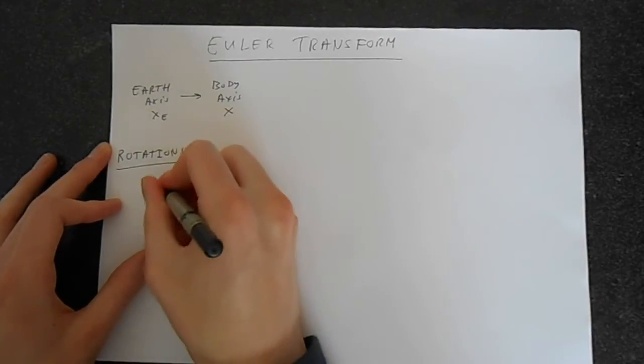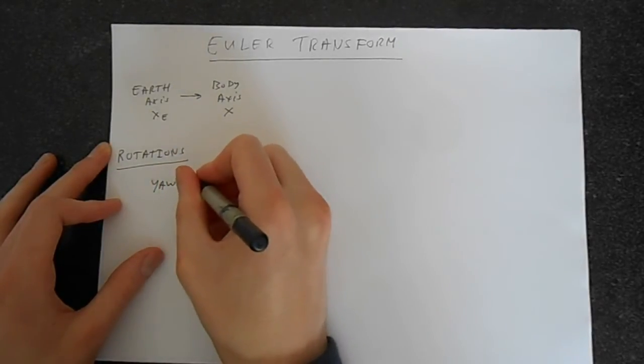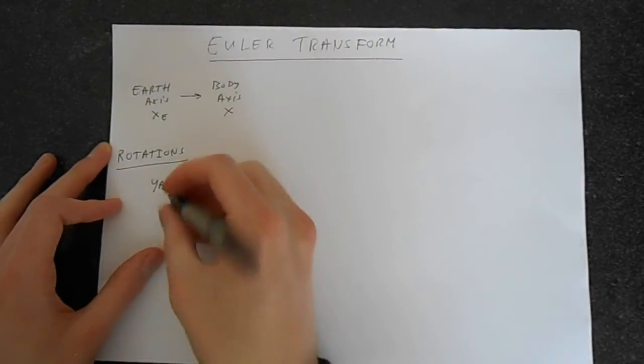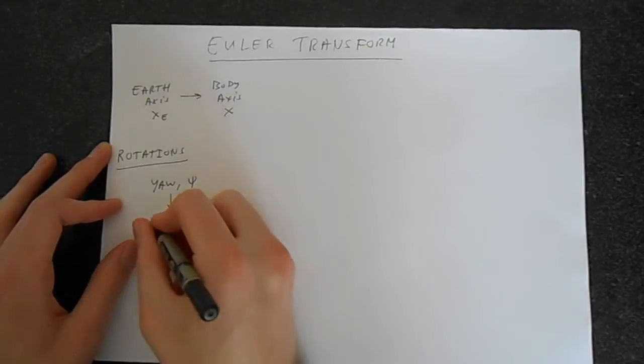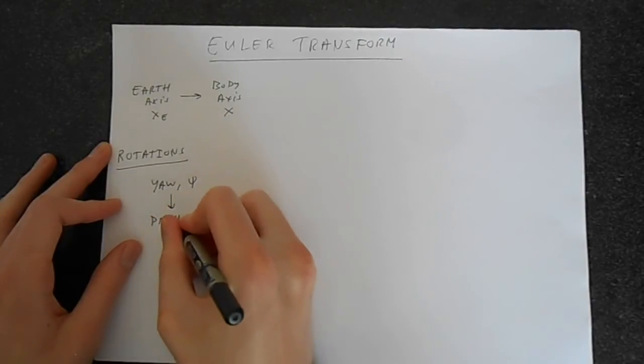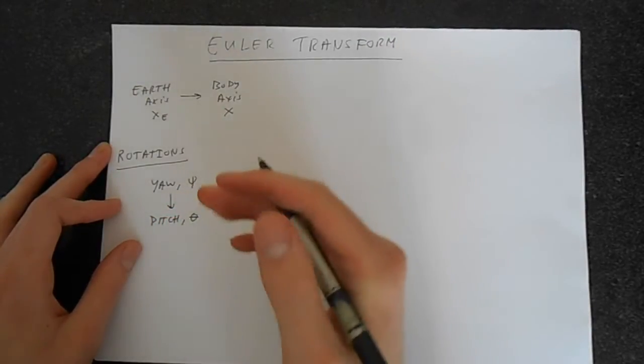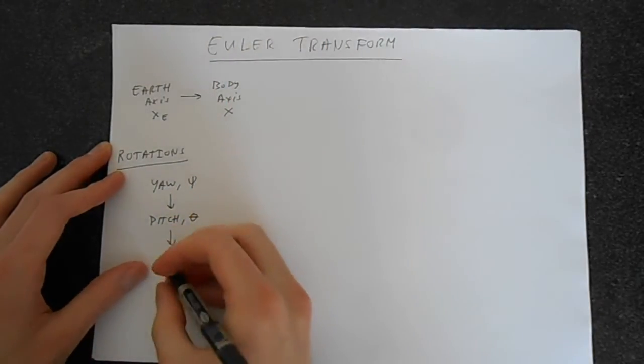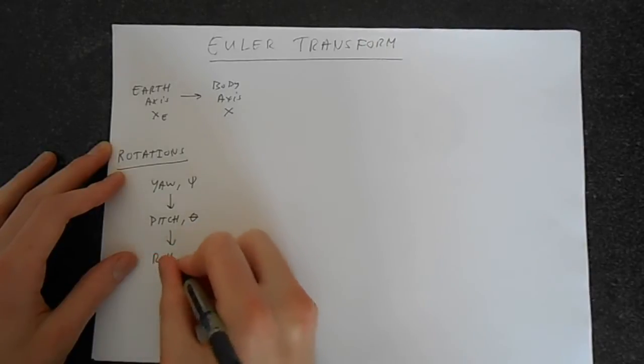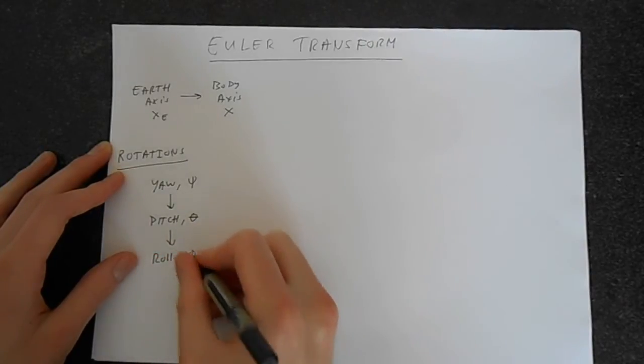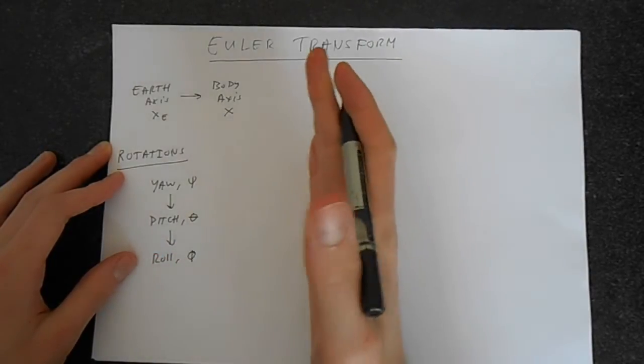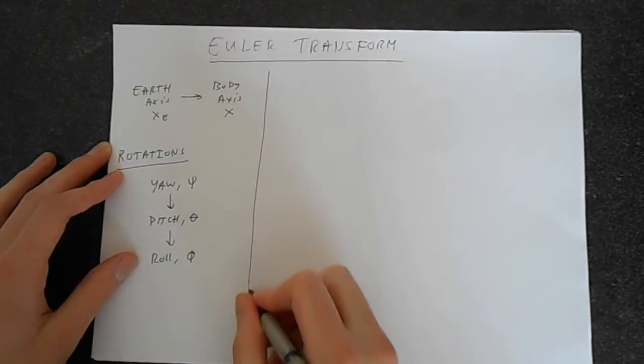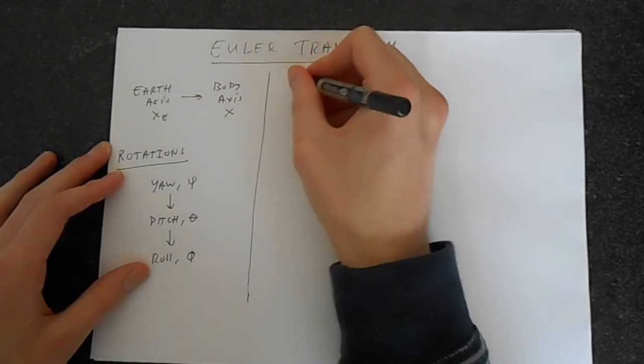We start with the yaw which we're going to denote by this angle φ. So yaw is the aircraft in this sense, then we're going to go to the pitch at the angle θ. Pitch is going to be in this sense and then finally we're going to do roll which is going to be φ and that is the aircraft in this sense. We do the transformations in this order. So let's start by doing the yaw transform.